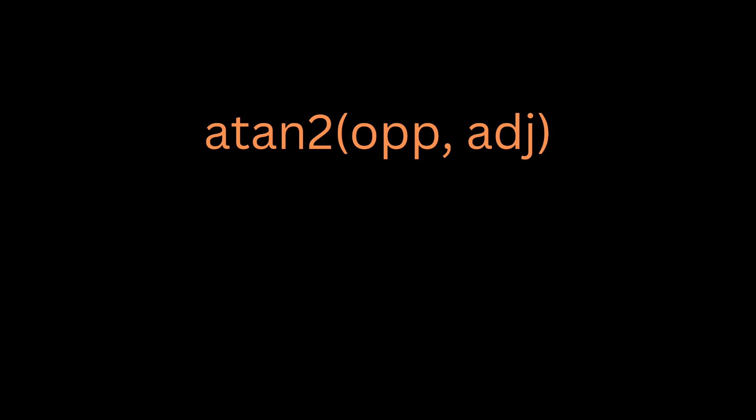Let's say for our triangle I use the atan and feed 5 and 8 as inputs - I will get this angle of 32 degrees. But if I were to flip the order of inputs around, I will get this angle of 58 degrees instead, because now I'm basically telling the arctangent function that this is the opposite side and this is the adjacent side.